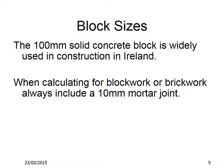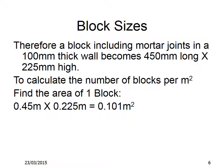The 100mm solid concrete block is widely used in construction in Ireland. When calculating for block work or brick work, always include a 10mm joint. Therefore, a block including mortar joints in a 100mm thick wall becomes 450mm long by 225mm high.